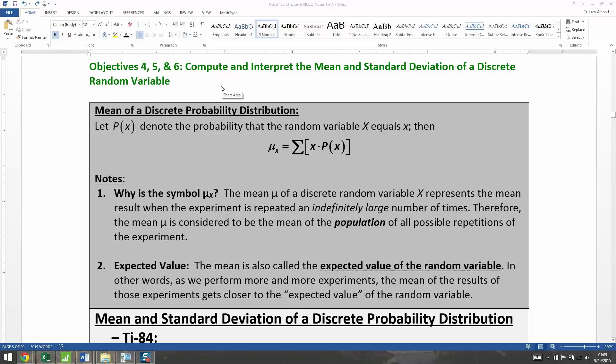Now that we know how to recognize a discrete random variable, how to make a distribution of it in both table and graph form, we want to be able to find the mean and standard deviation of that discrete random variable for some very good reasons, especially in regards to the mean.